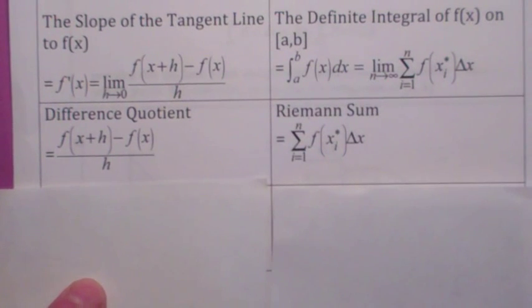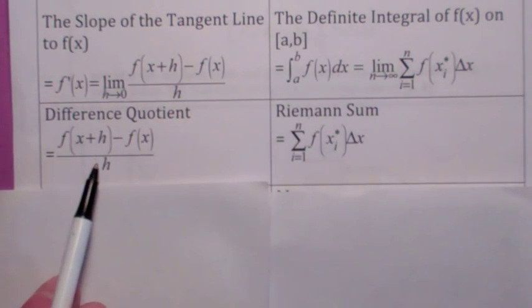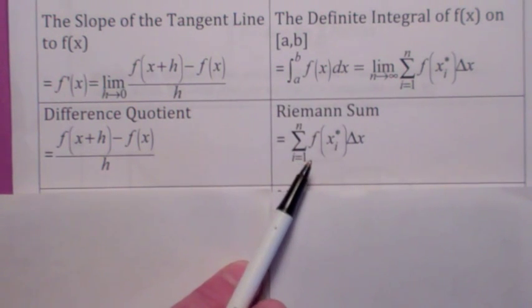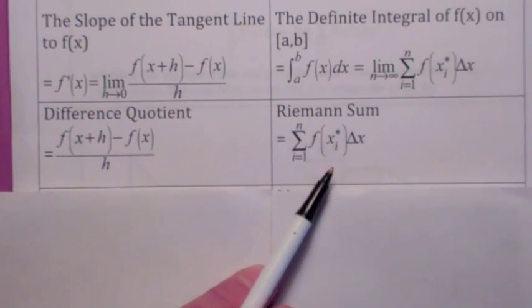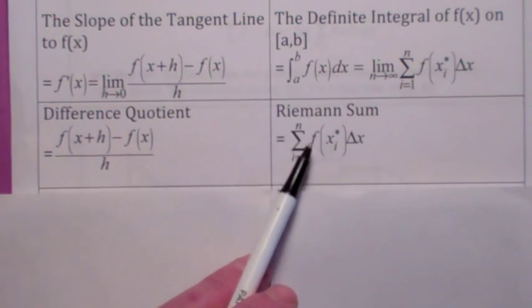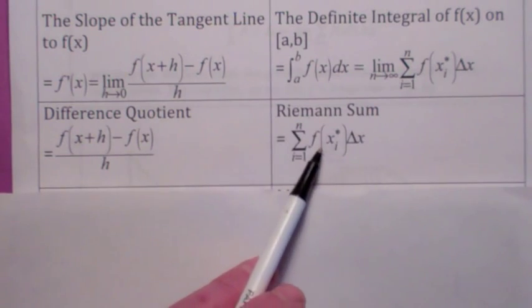The building block for the derivative last quarter was the difference quotient, right, the slope of the secant line. Well, the building block for the definite integral is the Riemann sum. You can think of that loosely as the sum of the areas of the rectangles, but again, some of those areas may be negative, so it's more general than that.